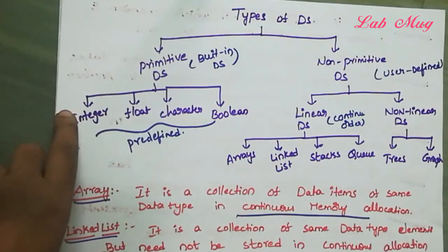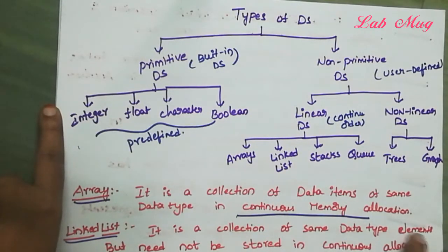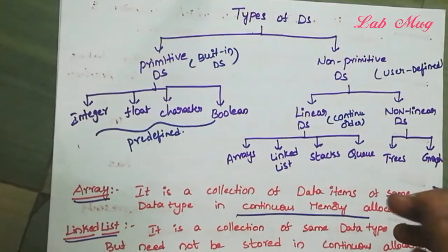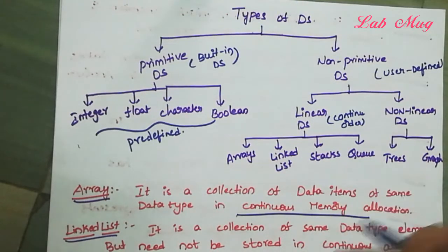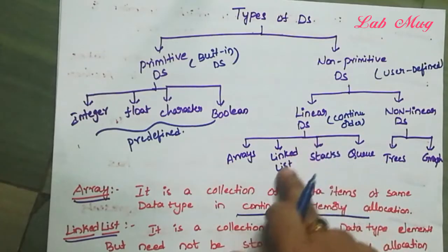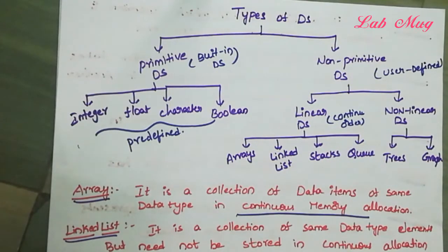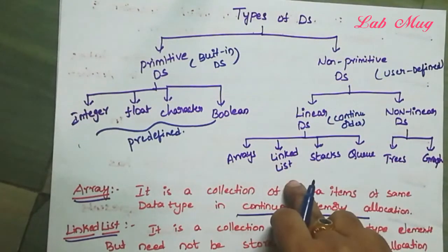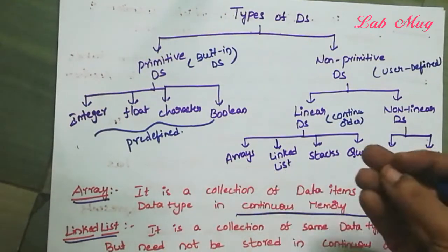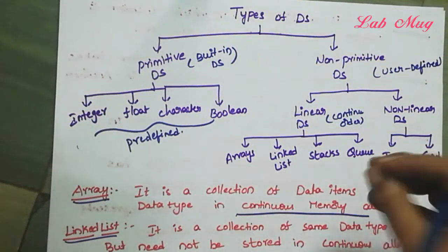Next is Linked List. A linked list is a collection of same data type elements, but the elements need not be stored in continuous allocation. It may use continuous or non-continuous allocation. That's why it is still designed under linear data structures, but linked list also allows non-continuous allocation.